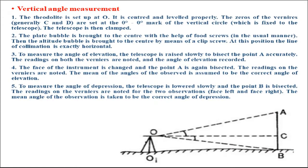Procedure for measurement of vertical angle. Suppose we want to measure the vertical angle AOB. The theodolite is set up at O, centered and leveled properly. The zeros of verniers C and D are set to 0 degrees, 0 minutes, and 0 seconds. When measuring the vertical angle, we use vernier C and vernier D, which are on the vertical circle of the theodolite. The telescope is then clamped when both verniers C and D are adjusted to zero, meaning the telescope will be exactly horizontal.